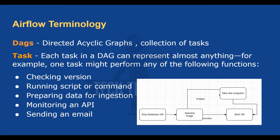Let me give you a simple example. Every weekend we have to stop our database VM, take a backup using a machine image. If the machine image creation is successful, it should start the VM. If machine image creation fails, instead of a machine image we will take a disk snapshot — which is also a kind of backup — and if that snapshot is successful, it will start the VM.